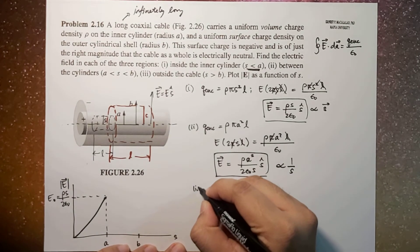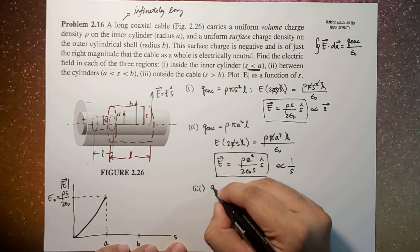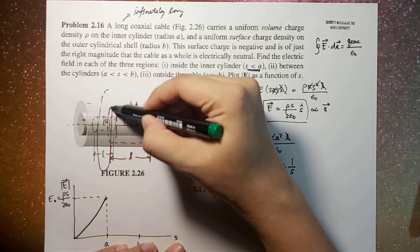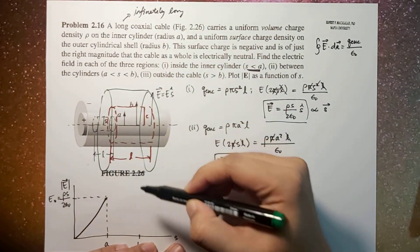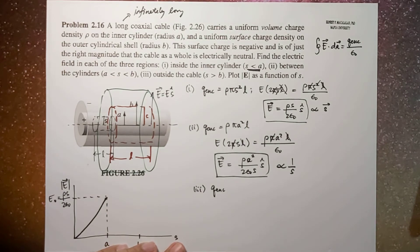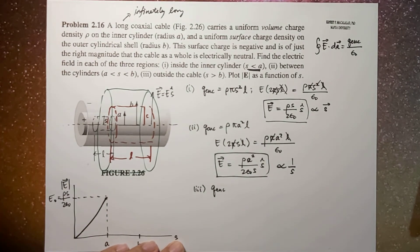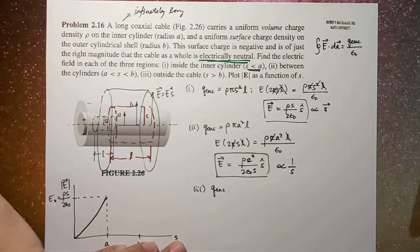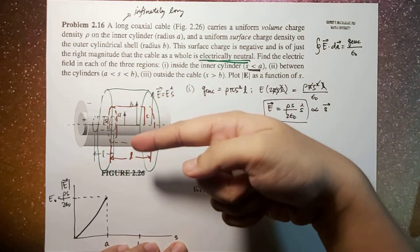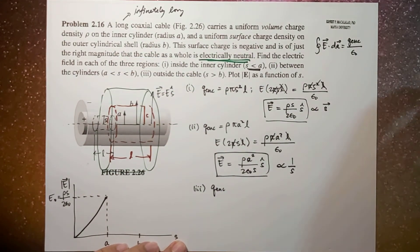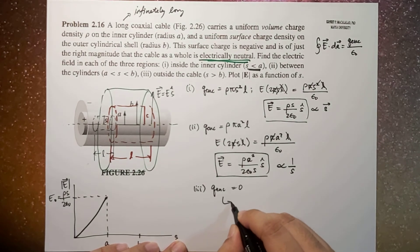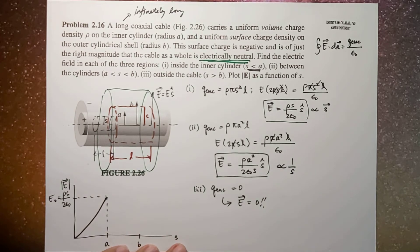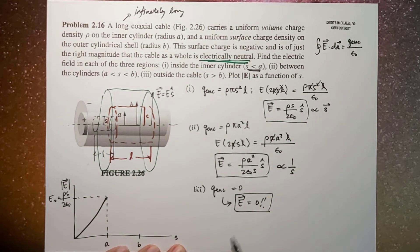And then lastly, for the third region, Q enclosed—the region will now be the whole of this. Now it's mentioned here that as a whole, the cable is electrically neutral. So that means the enclosed charge by this Gaussian surface is equal to 0. So therefore, the electric field is 0. Amazing, right? Very easy.